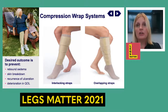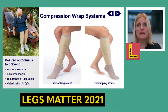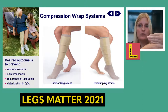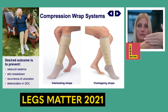At present there are two different styles of wraps on the market. We have interlocking styles, where one strap sits with the next strap on top, and overlapping wraps, which mimic bandaging with a 50 percent overlap.